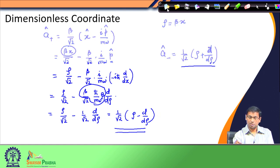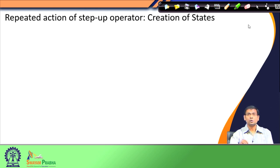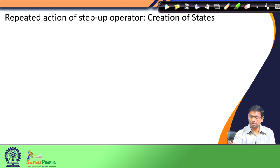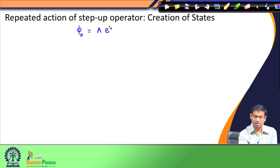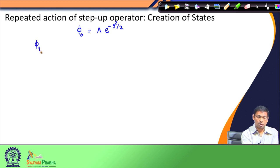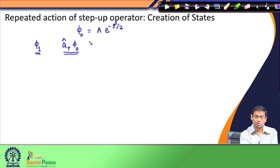We now continue: so far we have the functional form of the lowest eigenfunction phi_0, but we do not yet know the functional forms of the other eigenfunctions of the harmonic oscillator. To obtain phi_1, we apply the step-up operator a+ on phi_0, since a+ acting on phi_0 is proportional to phi_1. We know the functional form of a+, so let's carry out this calculation.